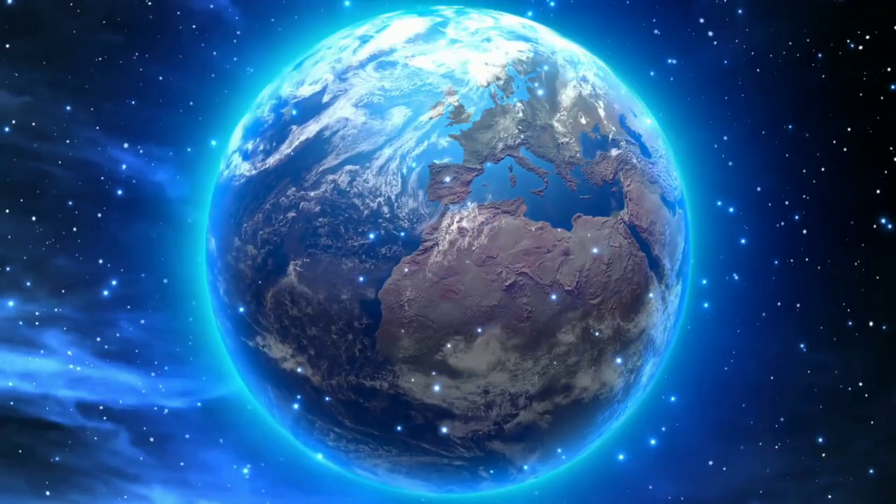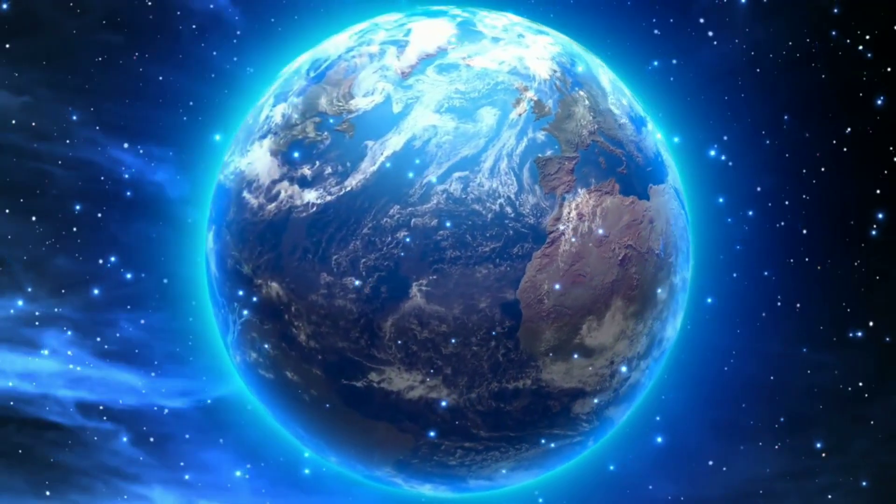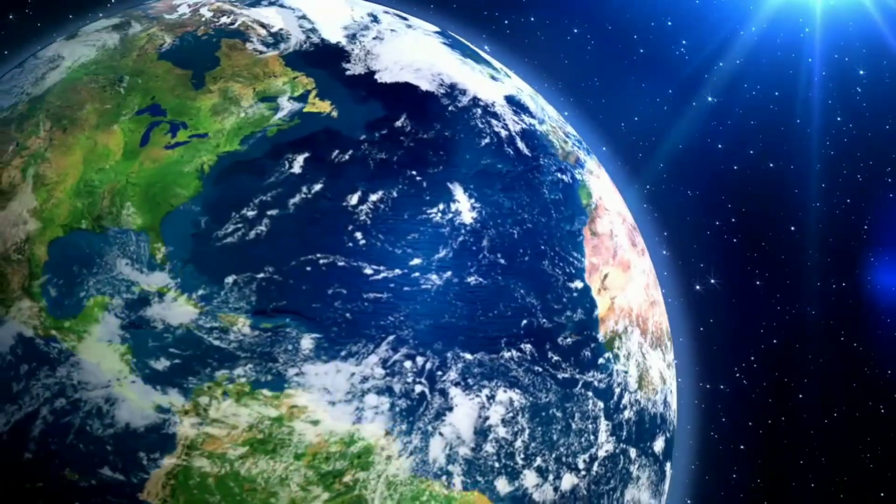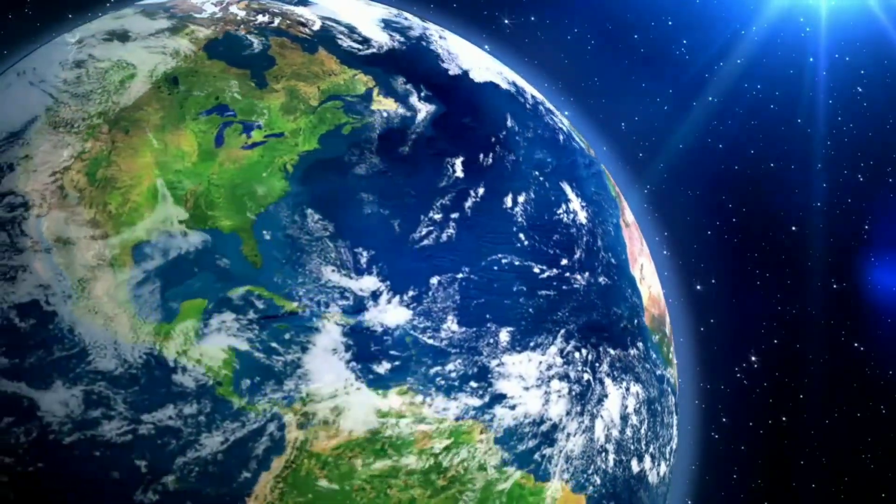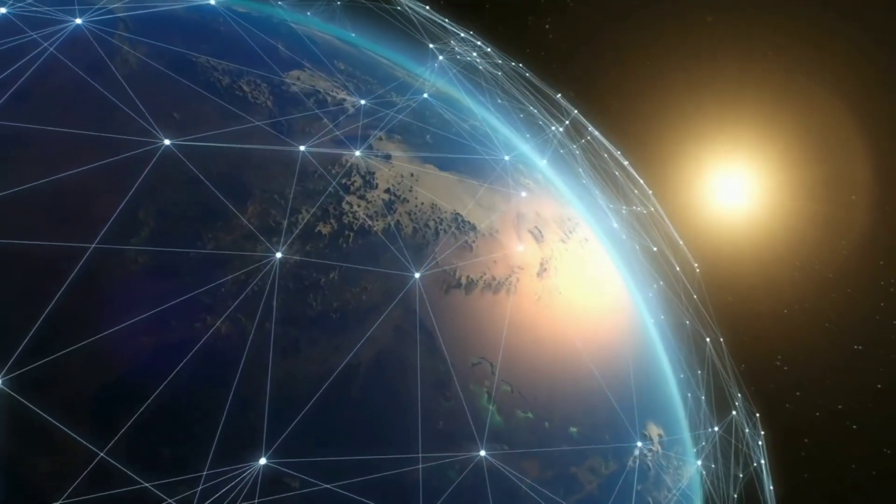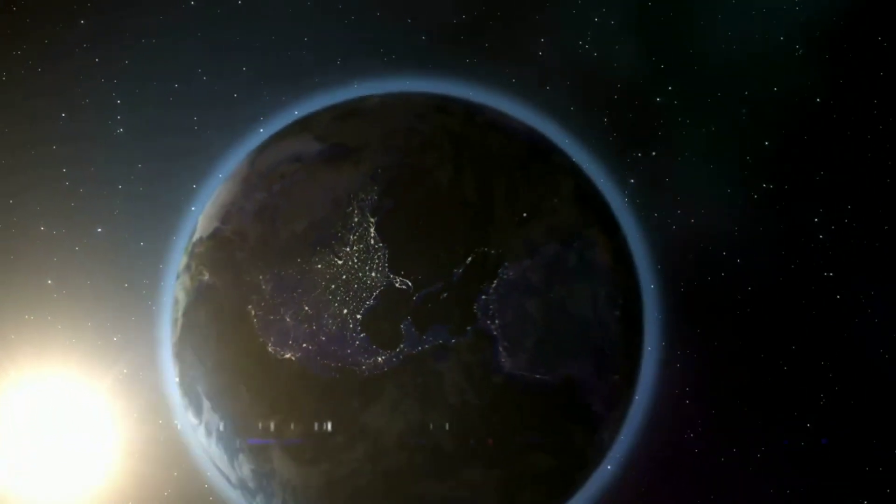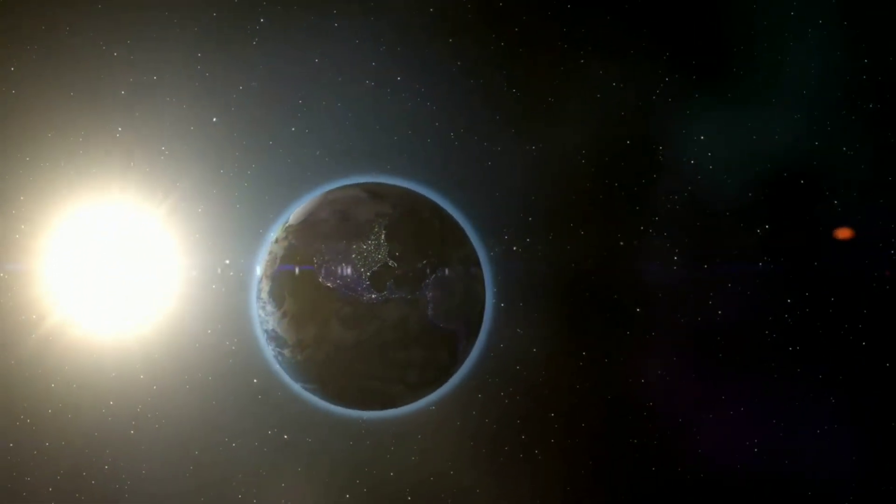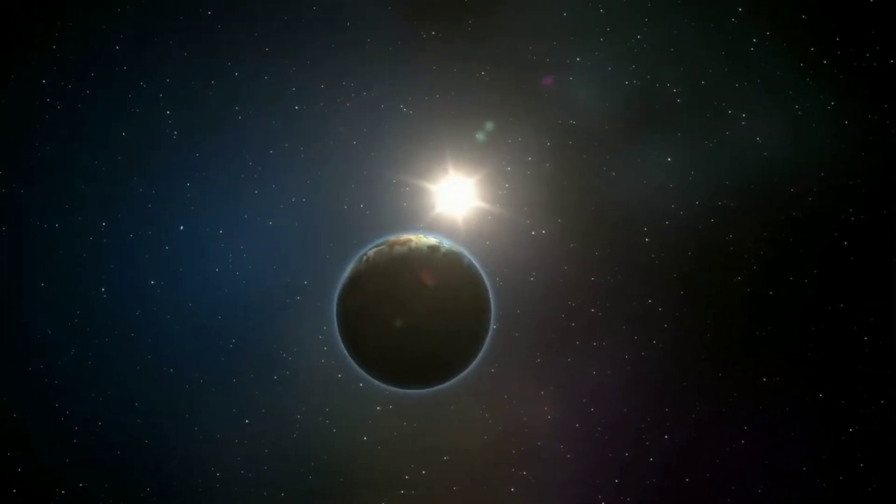Earth is the only planet in the solar system with plate tectonics. The outer crust of the Earth is broken up into regions known as tectonic plates. These are floating on top of the magma interior of the Earth and can move against one another. When two plates collide, one plate can go underneath another.